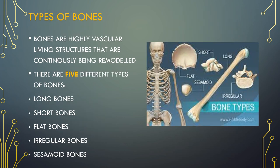The human skeleton has a number of functions, such as protection and supporting weight. Different types of bones have differing shapes related to their particular function. Bones are highly vascular living structures that are constantly being remodelled. There are five different types of bones: long bones, short, flat, irregular and sesamoid.